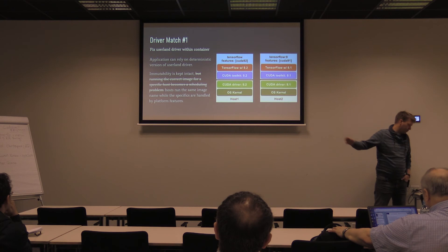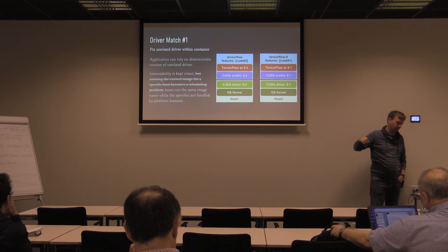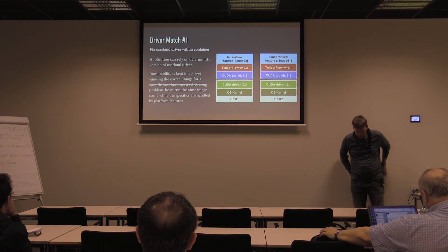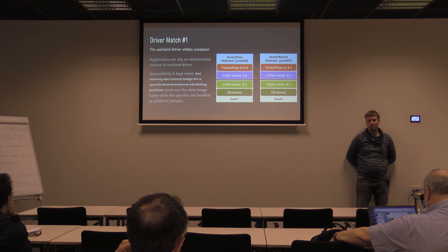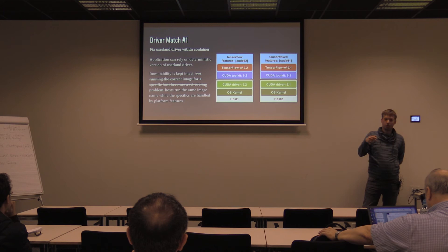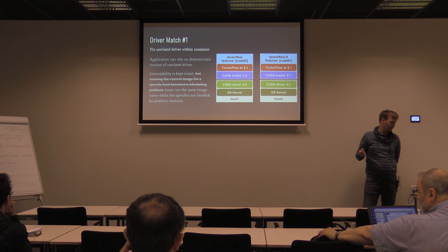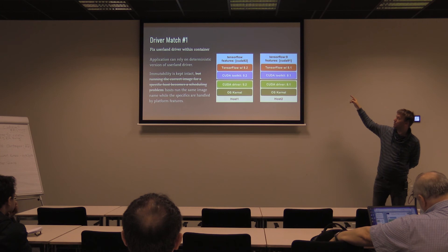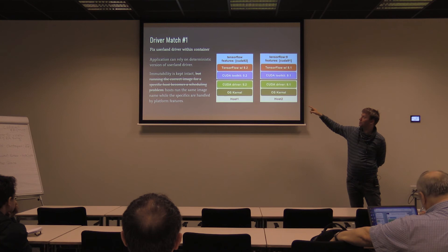The fix for the naming ugliness is using the platform feature within images — the manifest list. You already experience this: if you pull nginx on Windows versus Linux, Docker downloads the correct version automatically. Same for architectures — pull Ubuntu on ARM and you get the ARM image; on x86 you get the x86 image. I proposed extending the image spec to allow specifying hardware-specific features like CUDA 9.2 or 9.1, so that pulling a TensorFlow image automatically fetches the correct variant for your host without you specifying anything.